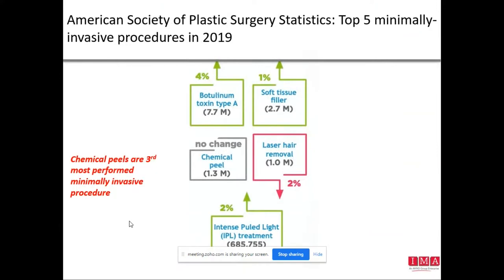The American Society of Plastic Surgery did a survey with statistics from 2019, identifying the top five most minimally invasive procedures. Chemical peels rank as the third most performed minimally invasive procedure. You can see botulinum toxin type A (Botox) at 4%, soft tissue fillers at 2.7 million, chemical peels at 1.3 million, laser hair reduction at 1 million, and intense pulse light at 685,755.